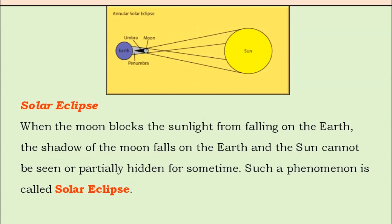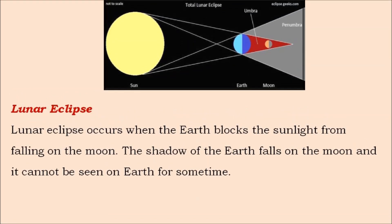Similarly, lunar eclipse occurs when the earth blocks the sunlight from falling on the moon. The shadow of the earth falls on the moon and we cannot see the moon from the earth for some time.